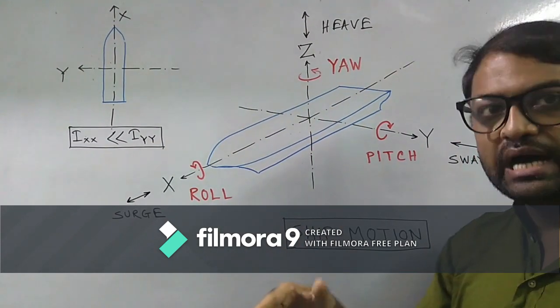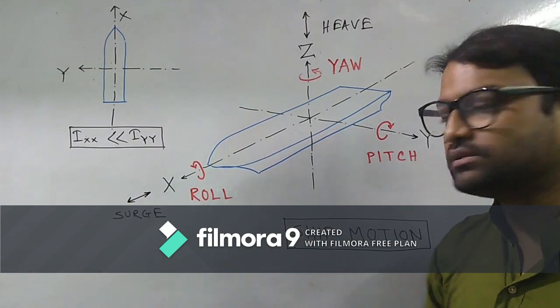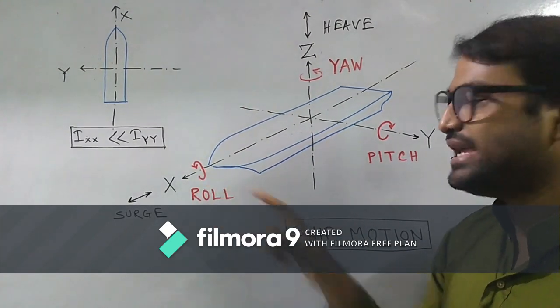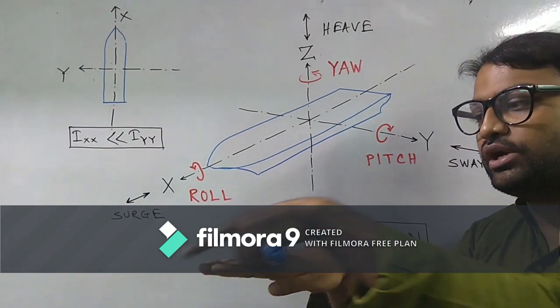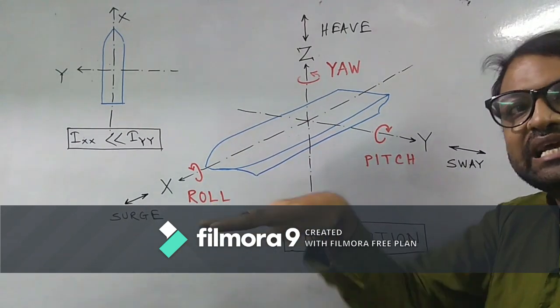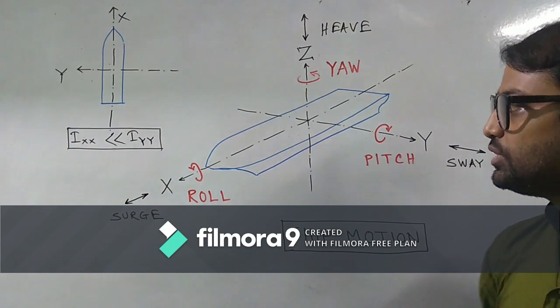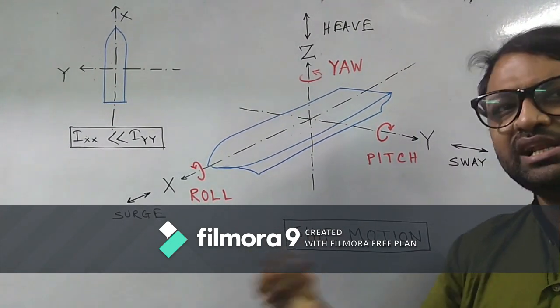We call it rolling, and this rolling happens about this axis. So all rotations are basically designated about any axis. Rolling is about x-axis. So if this is our ship and this is the longitudinal axis, then the ship, this type of rotational motion, is actually termed as rolling, which is most dangerous. I will come on rolling in a little bit of detail.